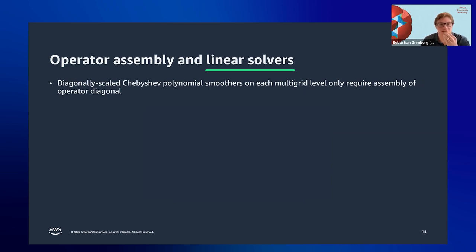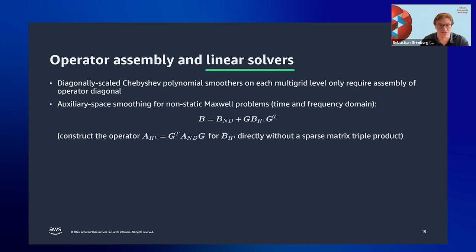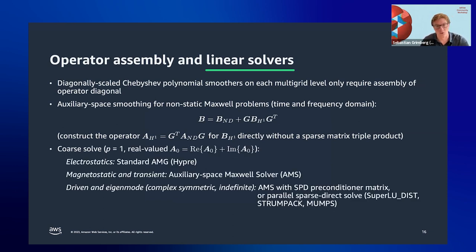For linear solvers, we use matrix-free p-multigrid, avoiding Gauss-Seidel smoothers in favor of Chebyshev polynomial smoothing to take advantage of partial assembly. For non-static Maxwell problems we need auxiliary space smoothers — smoothing on both the Nedelec space operator and the Laplacian in H1 space, using the discrete gradient to map between spaces. For the coarse solve in the indefinite frequency-domain case, we assemble the matrix (real-valued) and use a parallel sparse direct solver at the coarsest level to maintain convergence even at high frequencies.